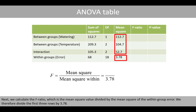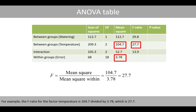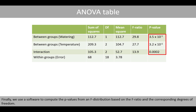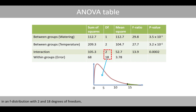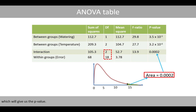Next, we calculate the F-ratio, which is the mean square value divided by the mean square of the within-group error. We therefore divide the first three rows by 3.78. For example, the F-ratio for the factor temperature is 104.7 divided by 3.78, which is 27.7. Finally, we use software to compute the P-values from an F-distribution based on the F-ratio and the corresponding degrees of freedom. For example, we can calculate the area to the right-hand side of 13.9 in an F-distribution with 2 and 18 degrees of freedom, which gives us the P-value.